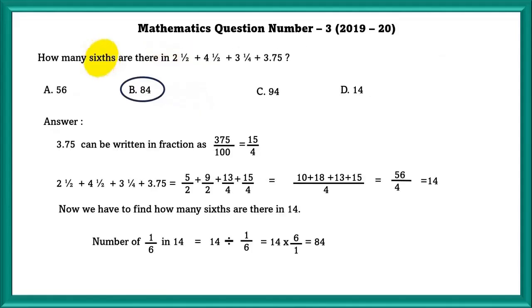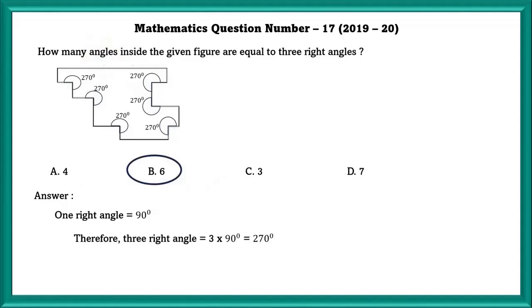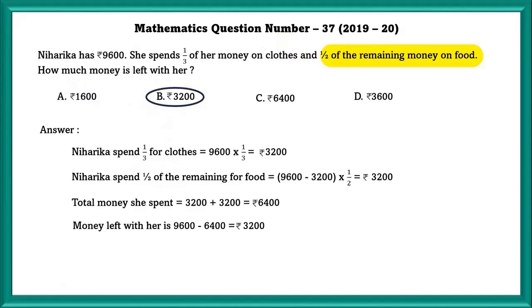In this question they are asking how many sixths are there, not six, sixths one by six. In this question they are asking how many are equal to three right angles, not one, not two, but three right angles. So we have to find 270 degrees, not 90 degrees.